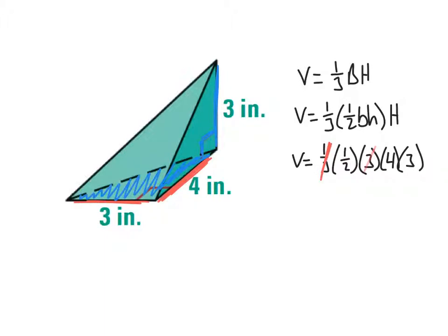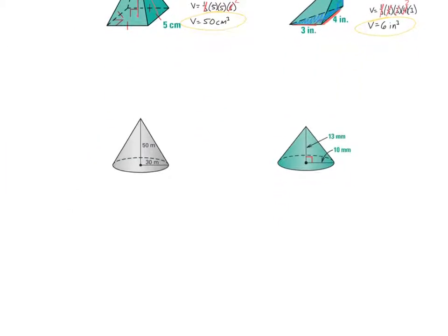One-third times four gives me two, and so I have two times three. Three, my volume is six cubic inches. Questions?